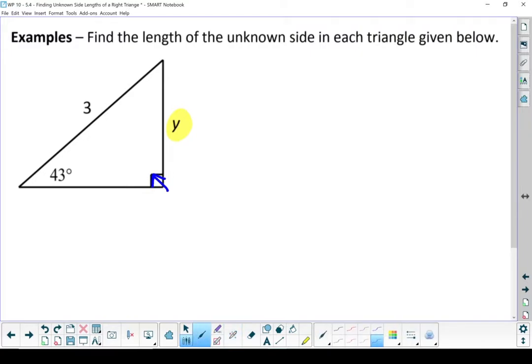The right angle points at my hypotenuse. If this is where my angle is, so I'm looking from that 43, this y is on the opposite side. And on the bottom, that's my adjacent side, because it's the leg that's beside my angle.